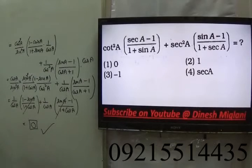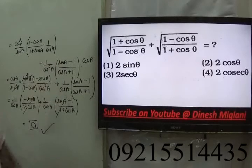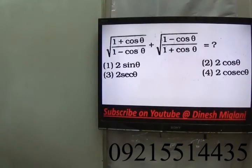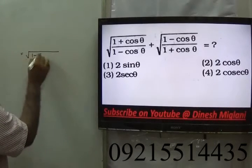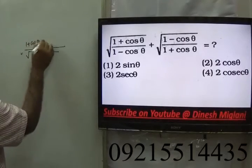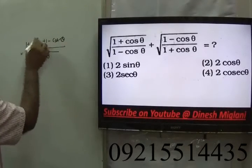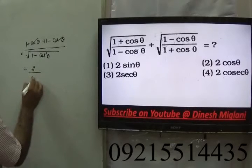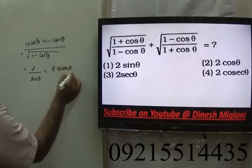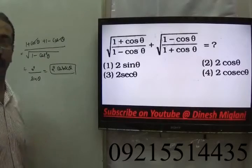Next problem: √((1+cosθ)/(1-cosθ)) + √((1-cosθ)/(1+cosθ)). Taking the LCM, the denominator becomes √(1-cos²θ) = sinθ, and the numerator becomes (1+cosθ) + (1-cosθ) = 2. So we get 2/sinθ. As per the given options, the answer is 2cosecθ — option 4.